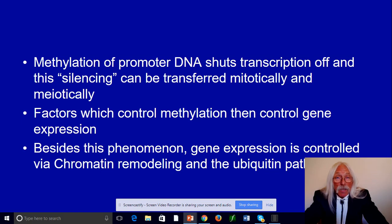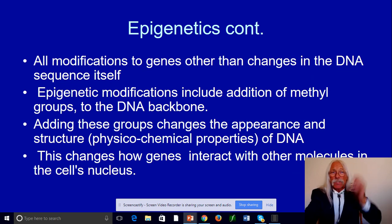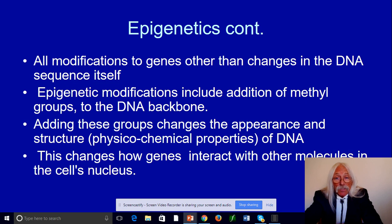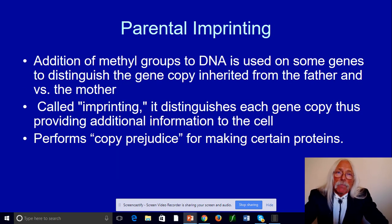Factors that affect control over methylation also control gene expression. Anything upstream from that methylation process is going to be a controlling factor — and that's where AMP kinase is going to come in, in a super cool way. Besides this phenomenon, gene expression is controlled via chromatin remodeling — modifications of protein-DNA interactions — and the ubiquitin pathway. All modifications to genes other than a change in the DNA sequence itself are what we refer to as epigenetics.